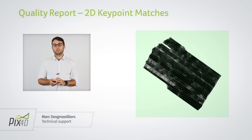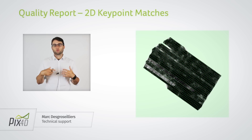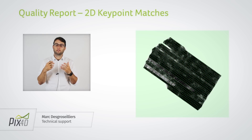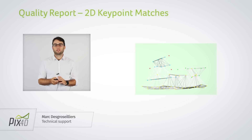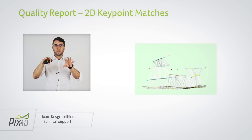We also have the 2D key point matches graphic. Every image is a vertex and a line is drawn between two images that share a key point. What you want is a nicely connected, dense graph — you can see a lot of black here, meaning many edges, which is quite good. What you don't want is something like this where you have several separate blocks. The blocks are color-coded, and here there are not enough matches between images, so some blocks are independent and could be oriented in incorrect directions.